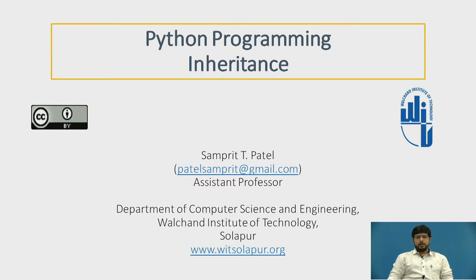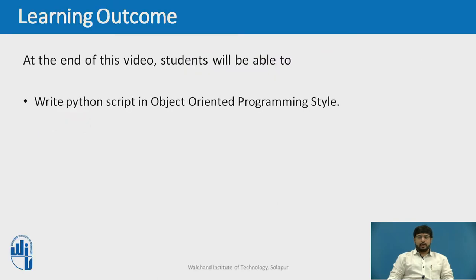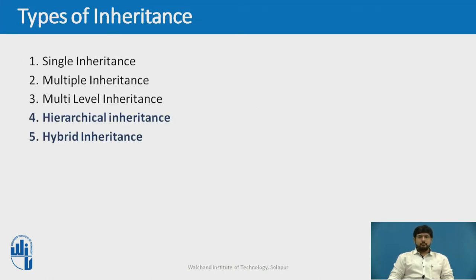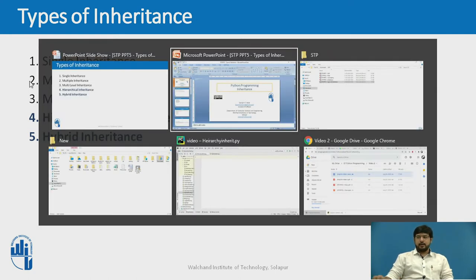We will continue a previous video about inheritance in Python. At the end of this video, you will be able to write a Python script in object oriented programming style. In the previous video of inheritance, we had seen how to implement single inheritance, multiple inheritance and multi-level inheritance. In this video, we will go through a hands-on session of creating and understanding hierarchical inheritance and hybrid inheritance.